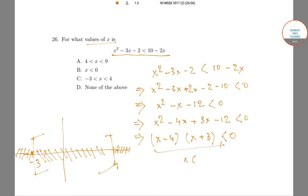x has to lie between -3 and 4. x cannot take the values -3 and 4 because in that case it would be equal to 0 and we have a strict less than sign, so these brackets are open brackets. And so C is our correct answer. Thank you.